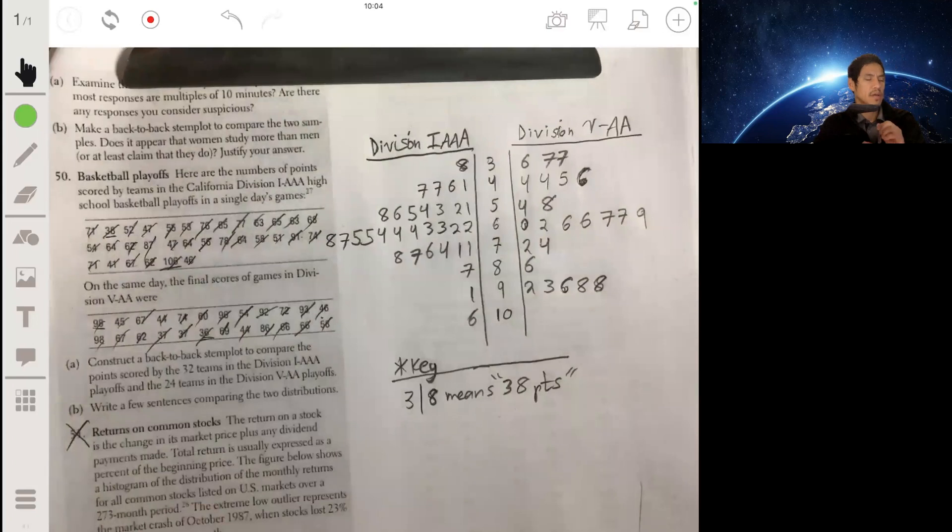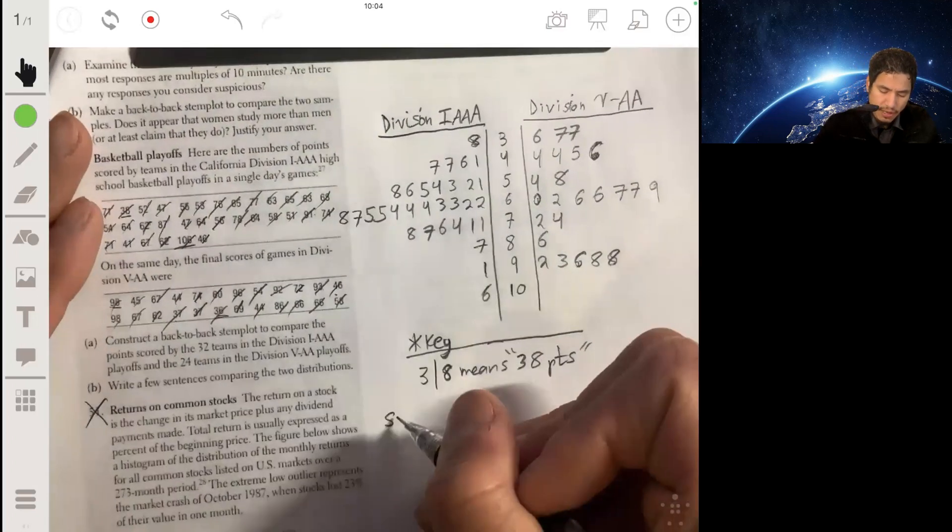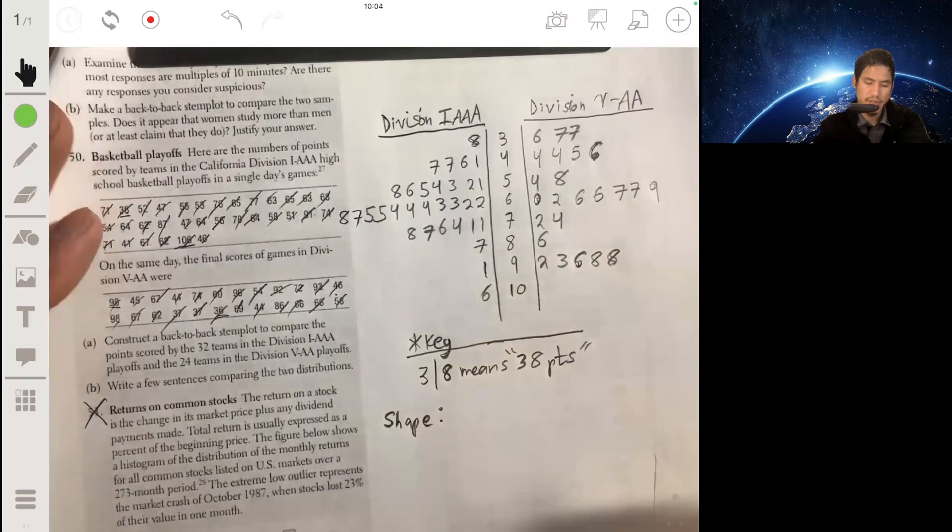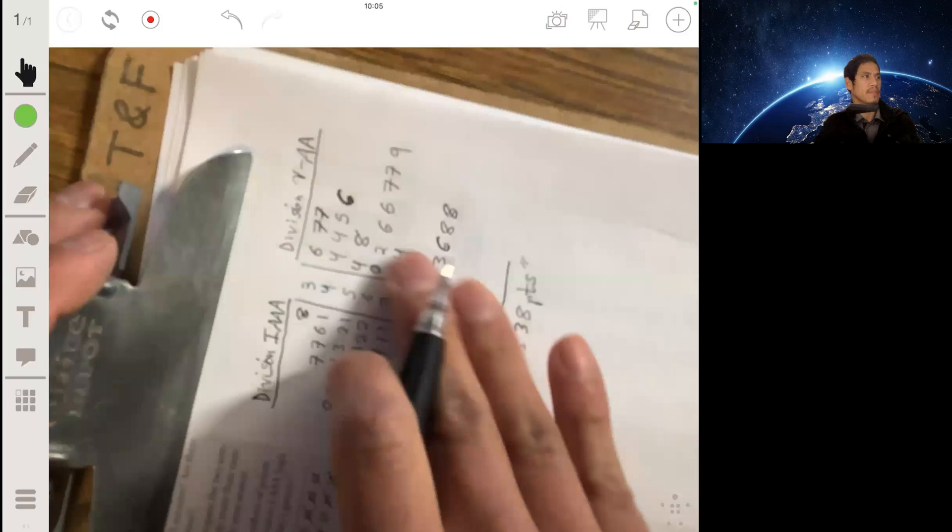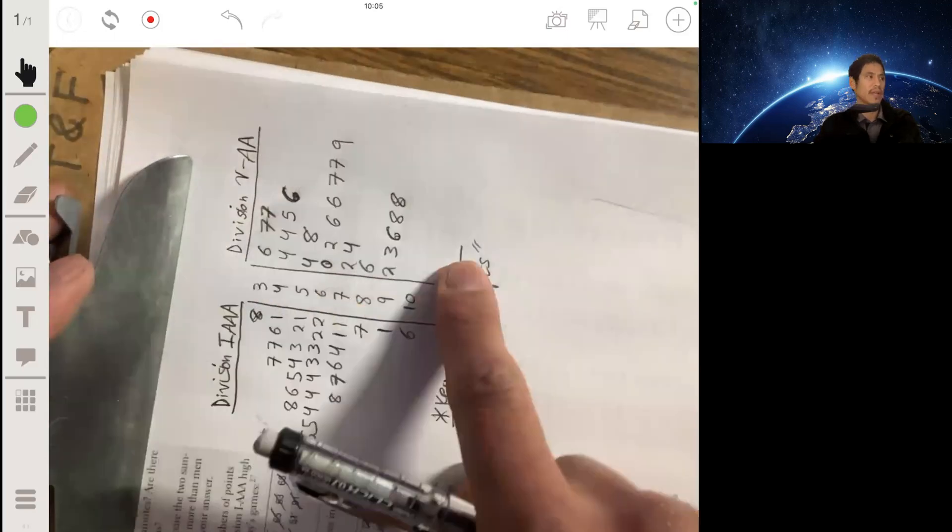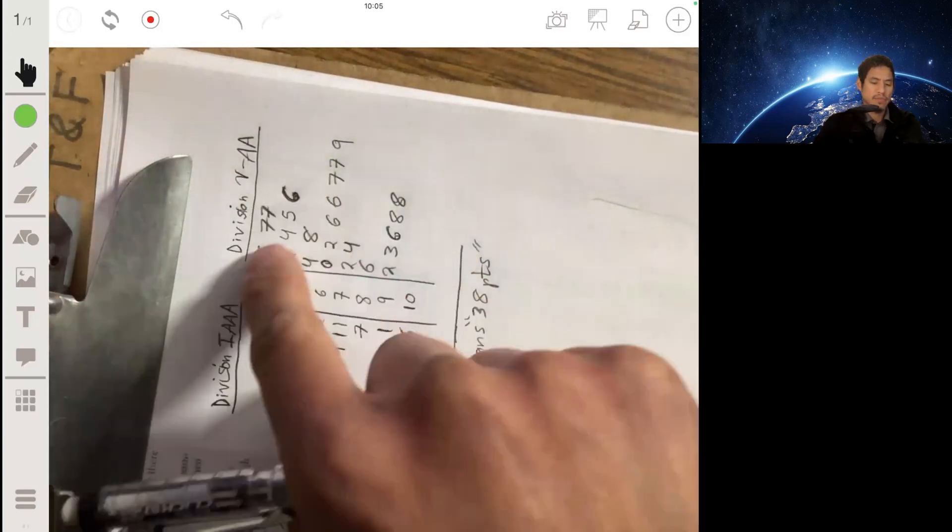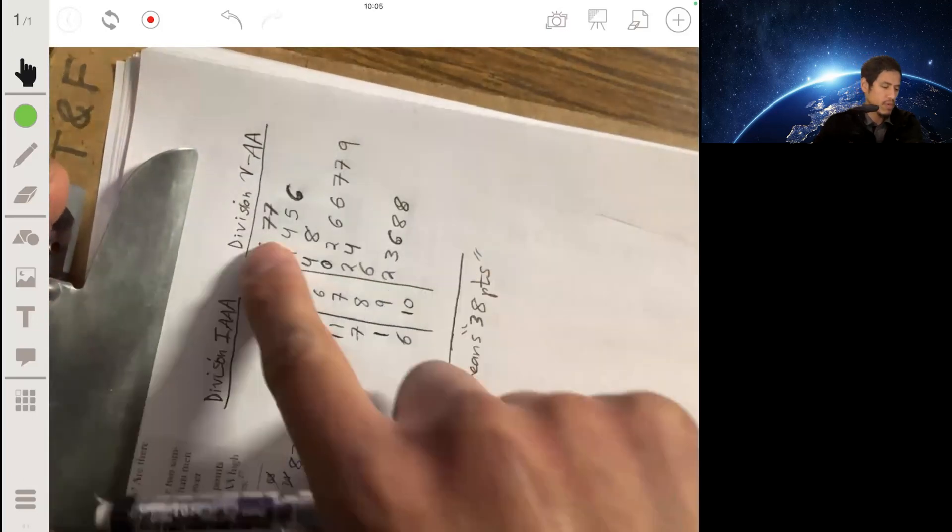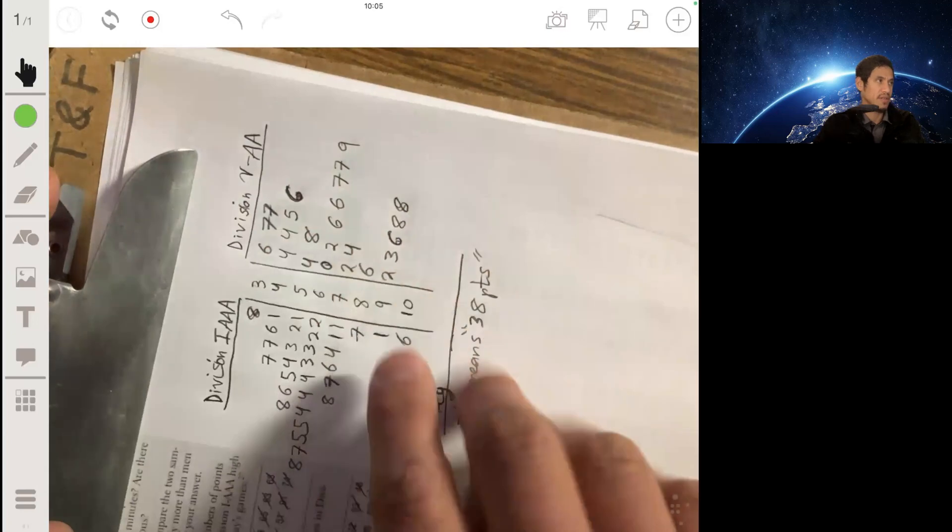Okay, so here's our back-to-back stem plot. When we're describing it we look at the shape, center, outliers, spread, so use our acronym SOCKS. Address the shape first. Now with stem plots, it can be helpful to turn maybe the page and look at them kind of like you would look at a normal density curve or histogram because it works the same way.